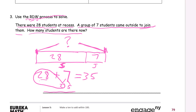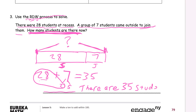And now we have to write our answer. Our question is: how many students are there now? There are thirty-five students now.